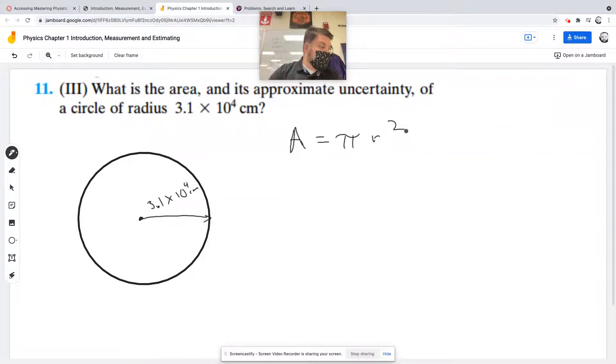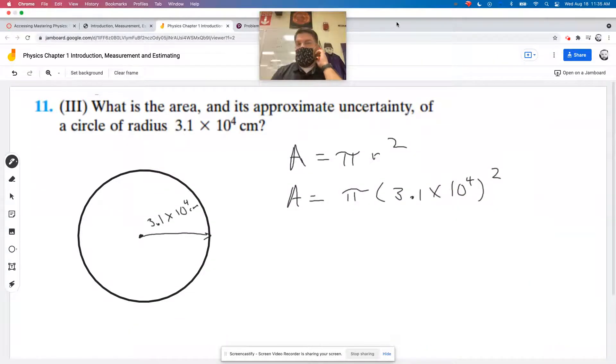Let's calculate the area. We'll use A equals π. Actually, we'll use 3.14 for now, but we prefer exact values when possible. So it's π times 3.1 times 10 to the 4th, then we square that.